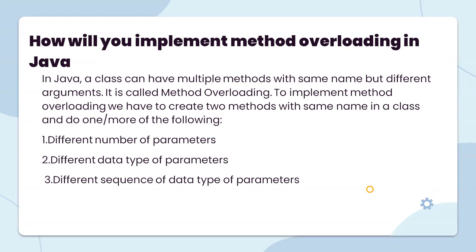We need to do one or more of the following: use a different number of parameters, or a different sequence of the type of parameters. So to summarize overloading: same method name, but different arguments.